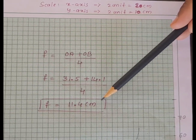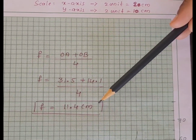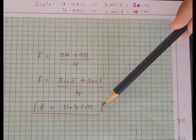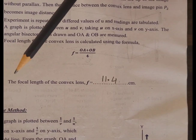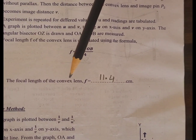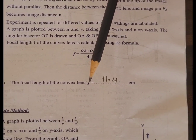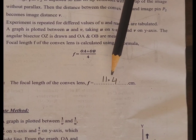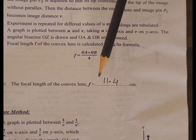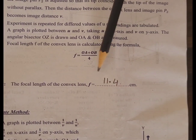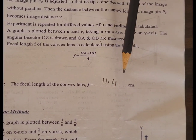The focal length of the convex lens obtained is 11.4 centimetres. Observing the result: the focal length of the convex lens, determined by plotting a graph of U versus V, is F equal to 11.4 cm, which is nearly equivalent to the rough or theoretical value of 10 centimetres.